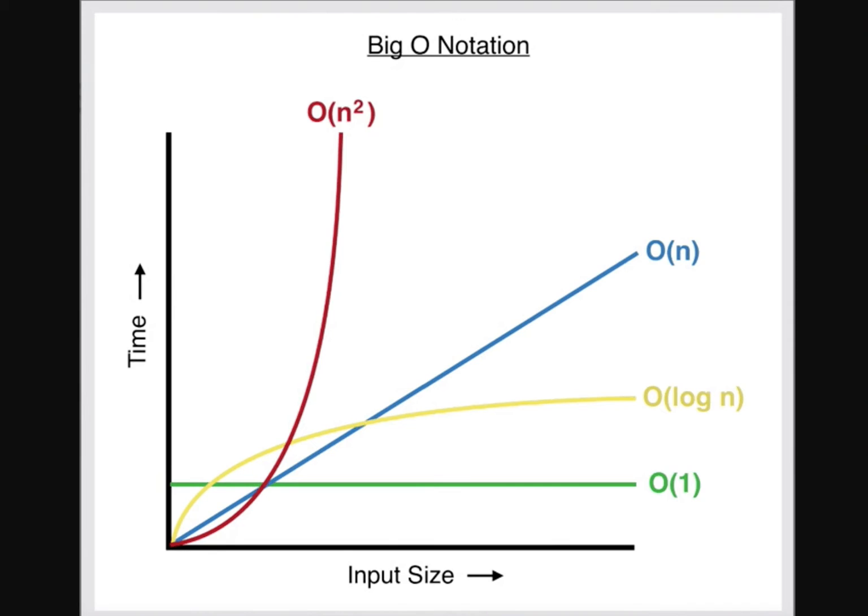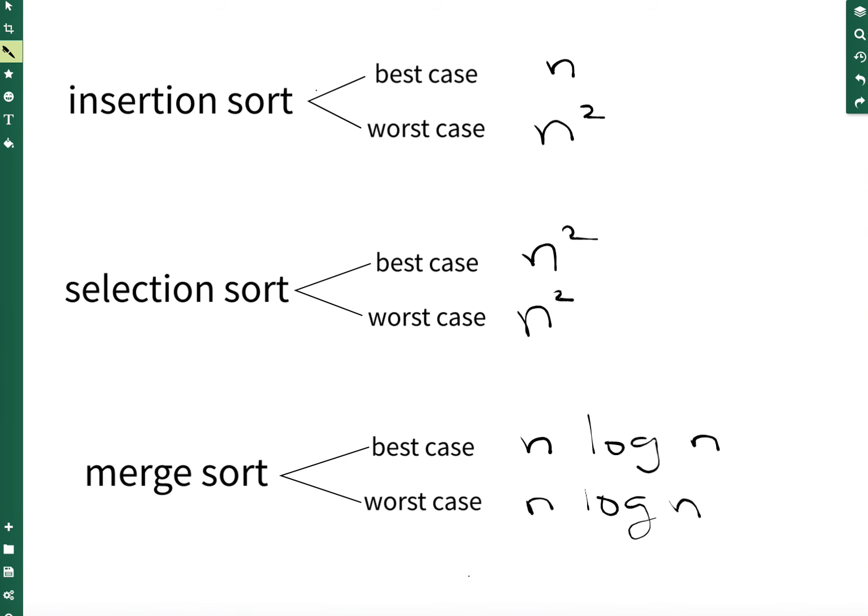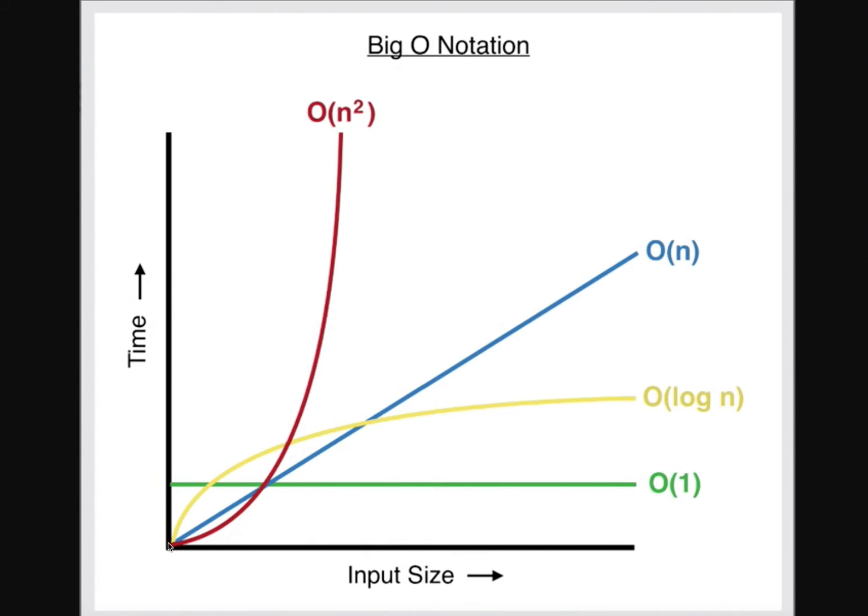So for very small lists, we would want to use selection sort. As crazy as that sounds, selection sort would perform better than insertion sort and merge sort for very small lists. You see that? Performs better than insertion at best case scenario and also merge.